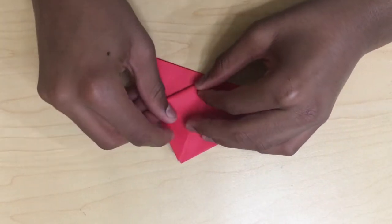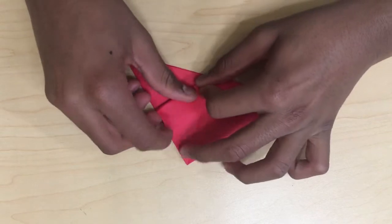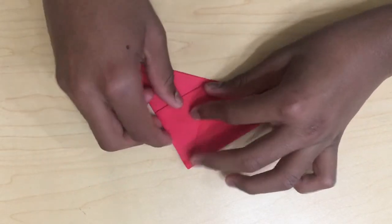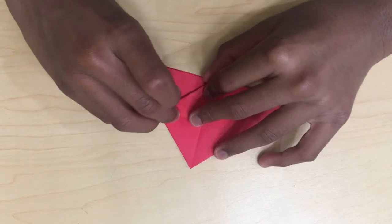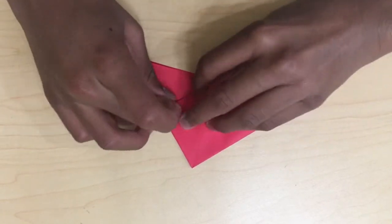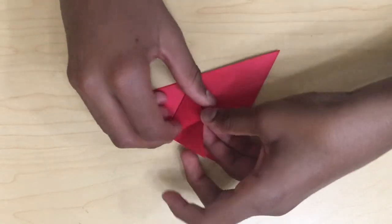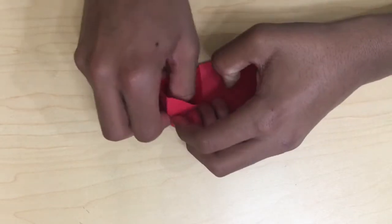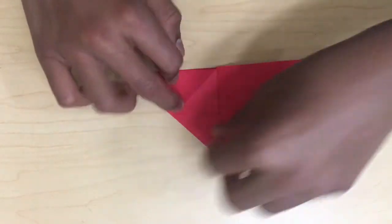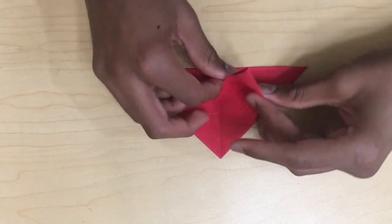Now push this up, pull it down, open it, and put your thumb inside. Do the same for all the other sides.